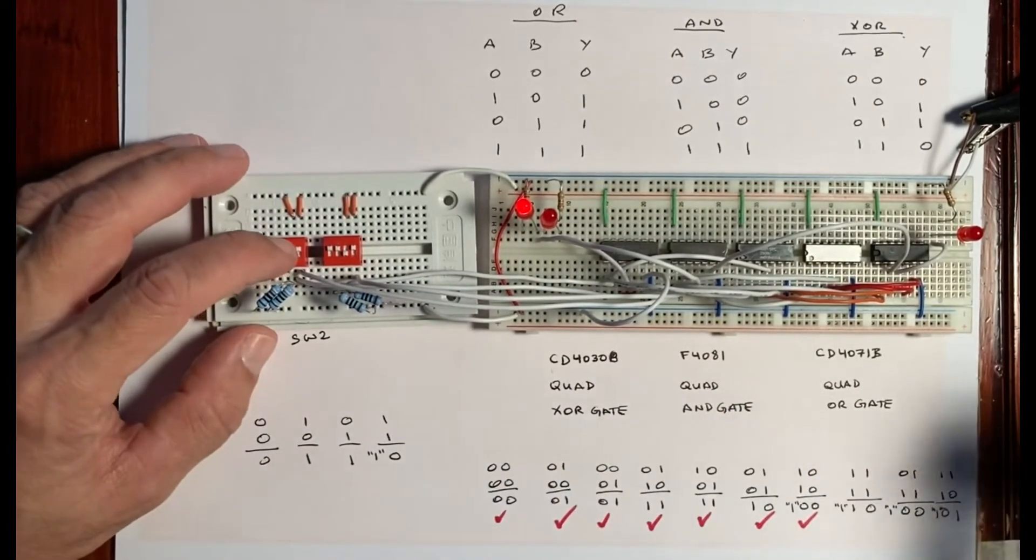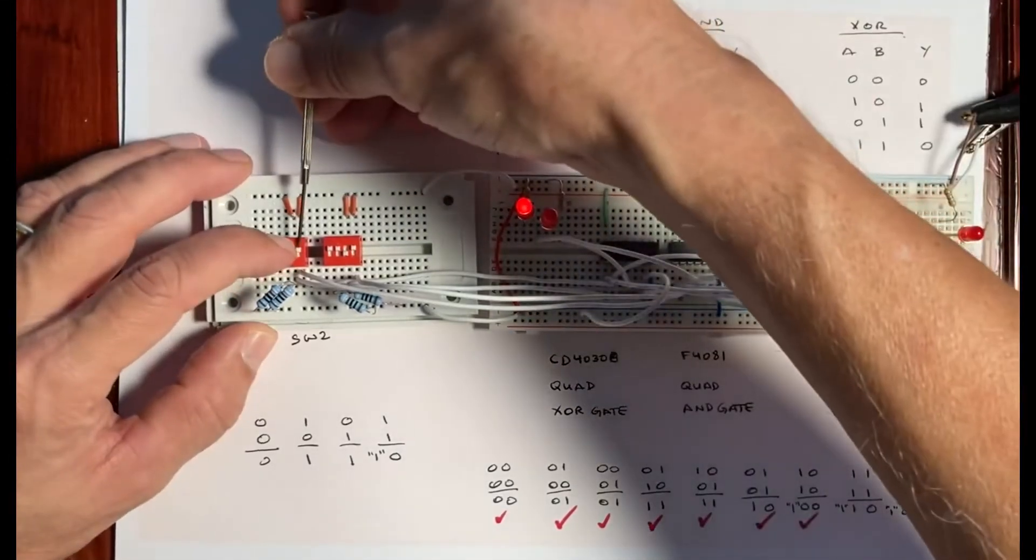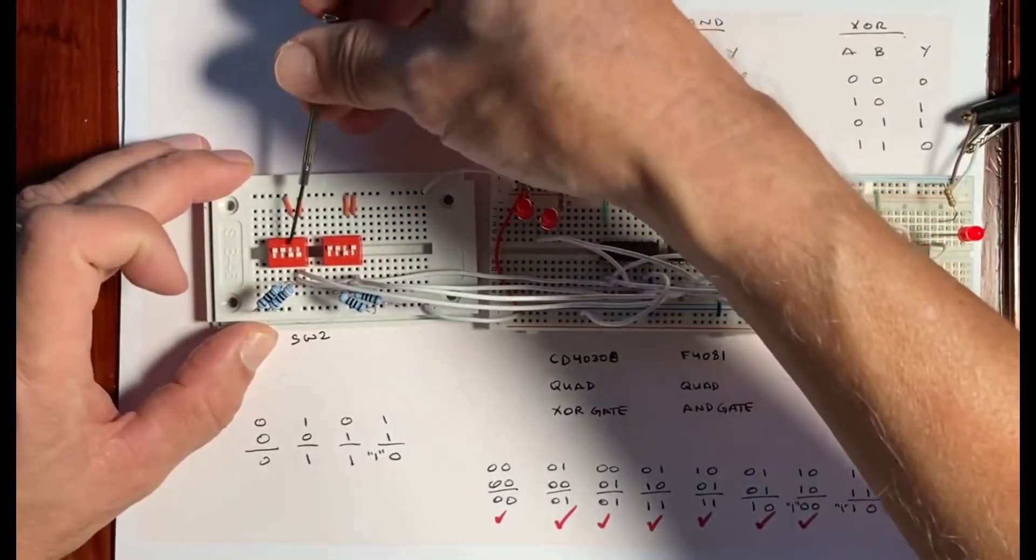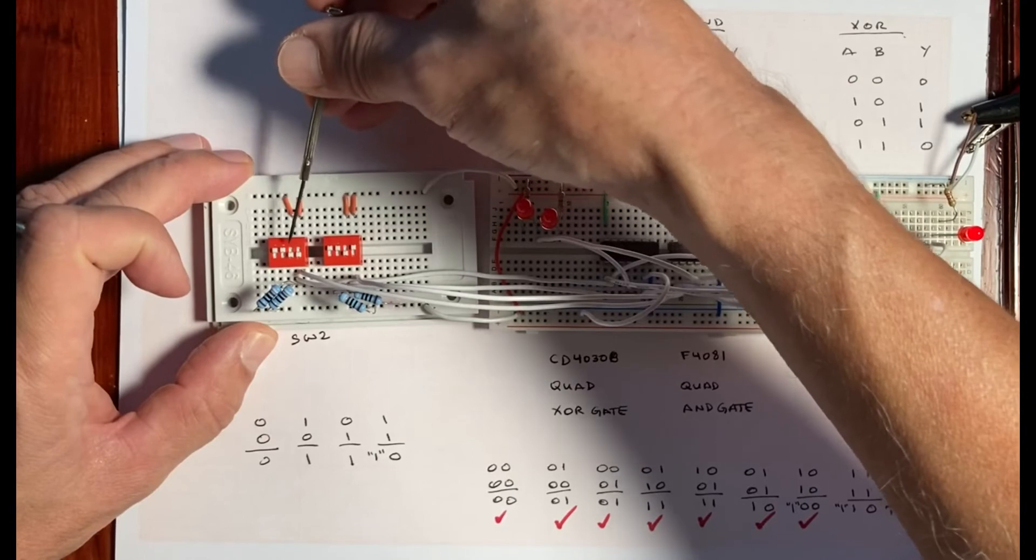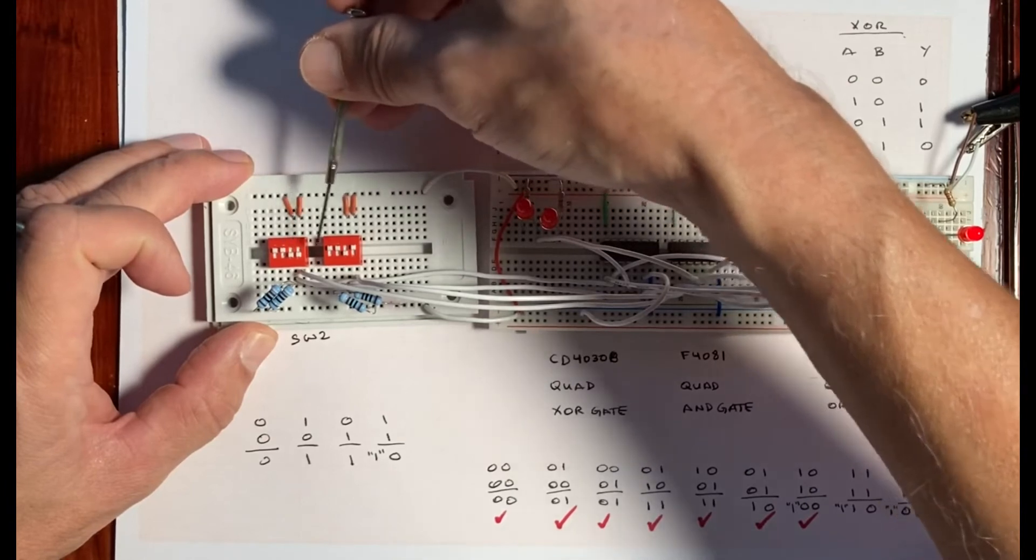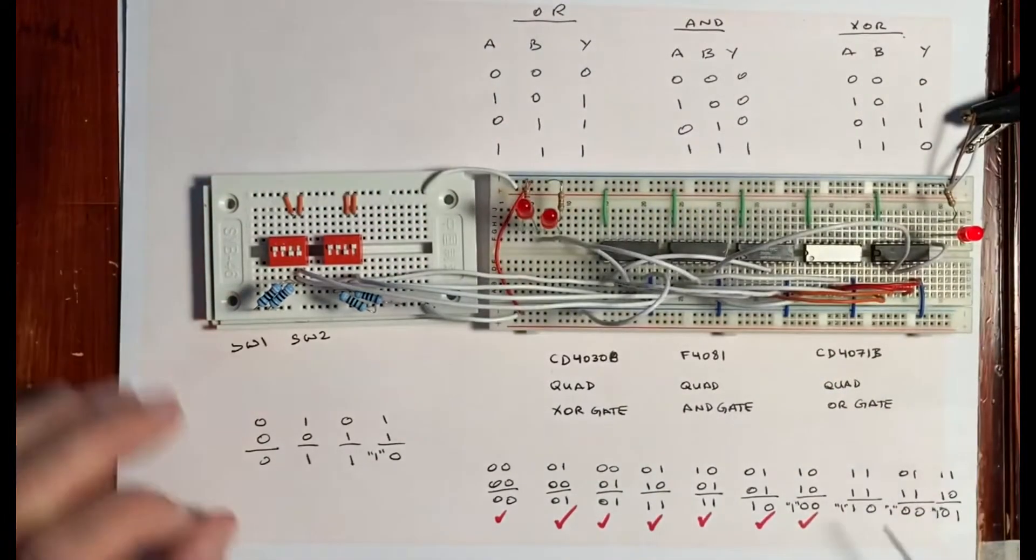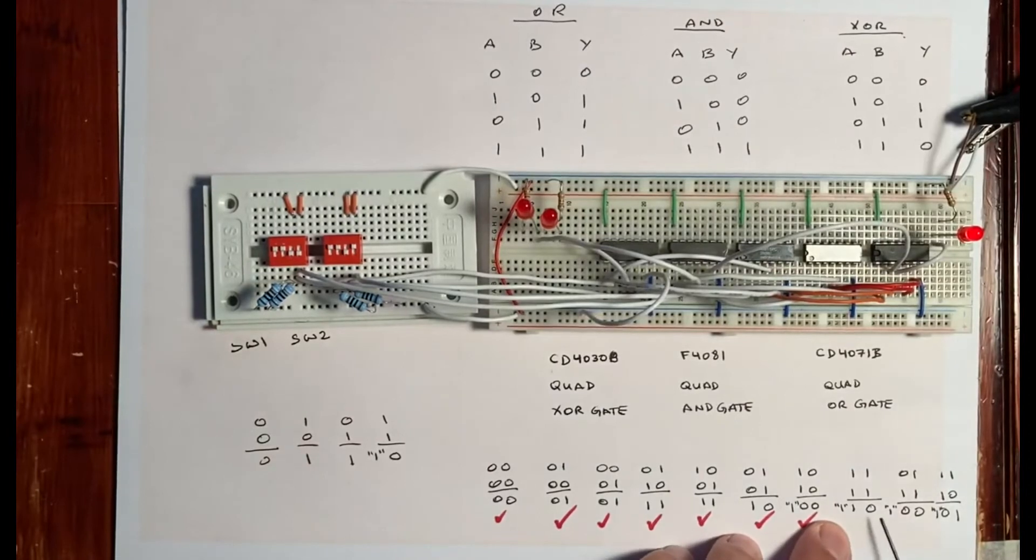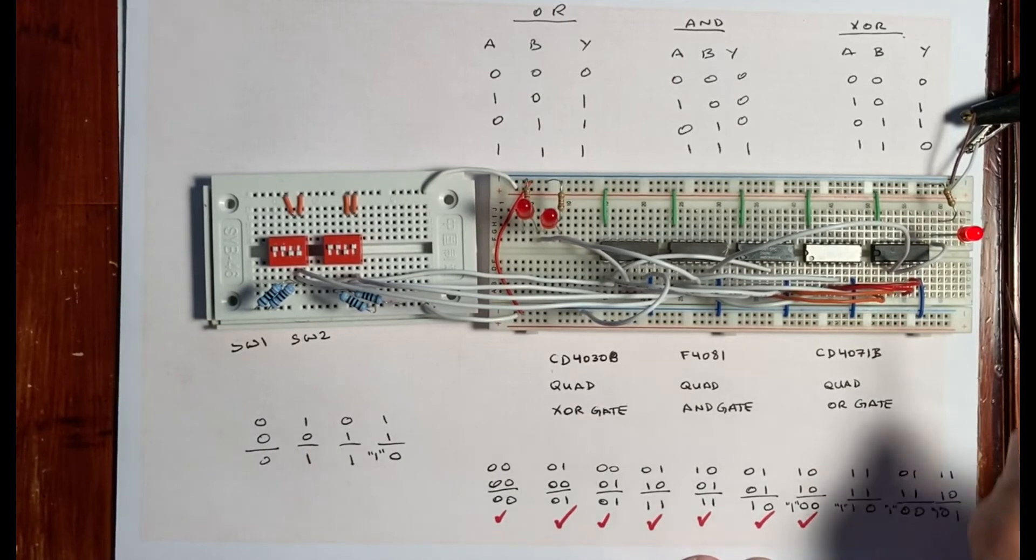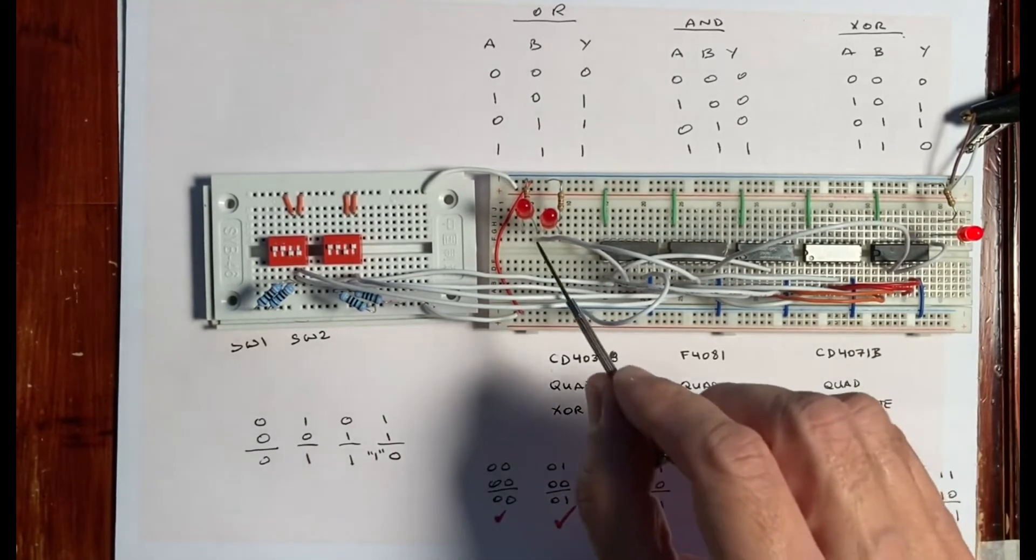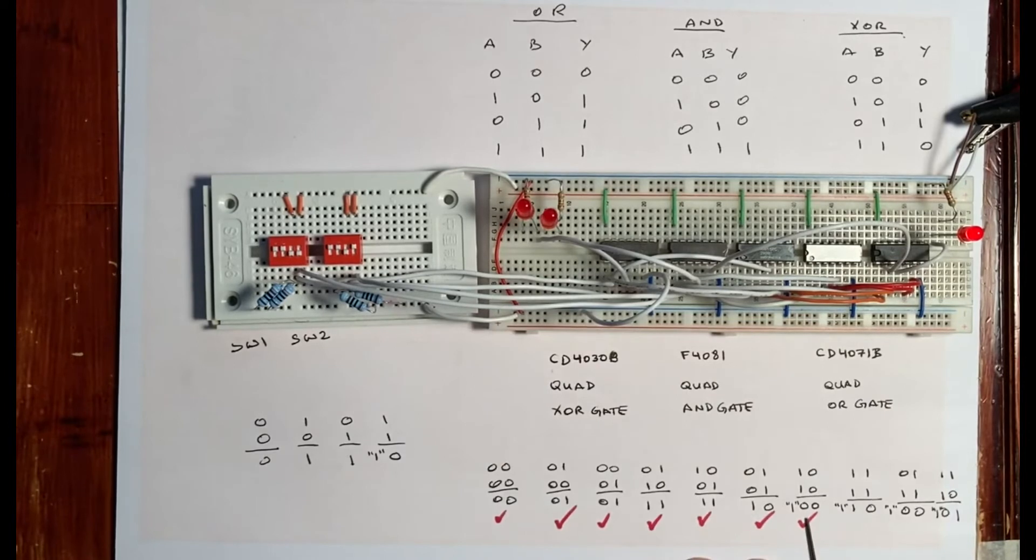Now if we go ahead and say 2 to the 0 which is 1 plus 2 which is 3 plus 1, 3 plus 1 gives us a 4 which should be 0, 0 and a carry over. Because remember this can only get up to 3, so this is what we're getting right here.